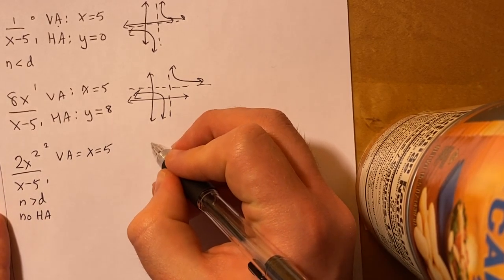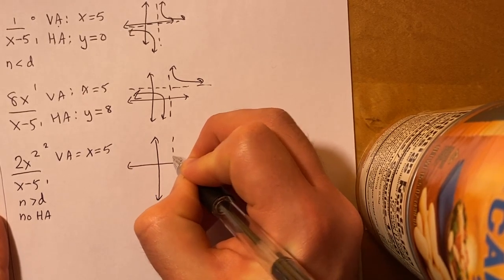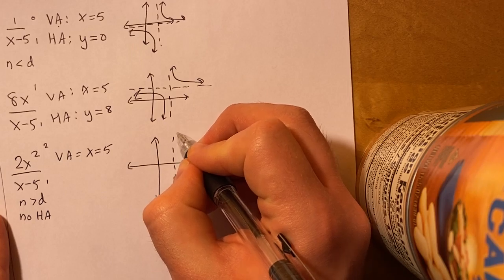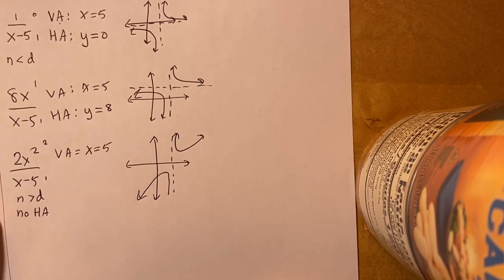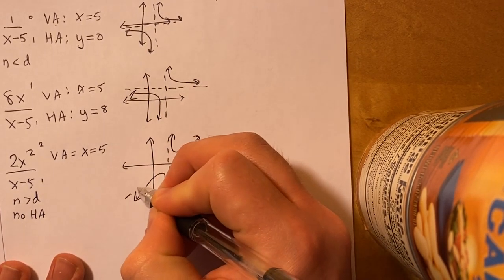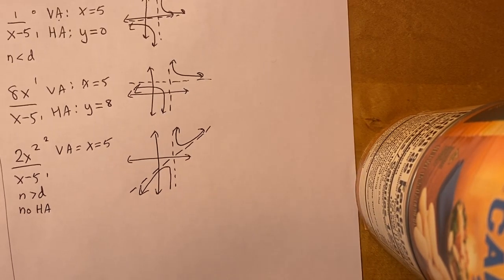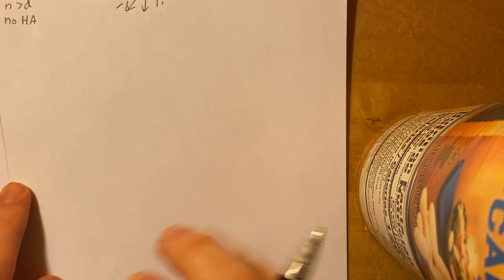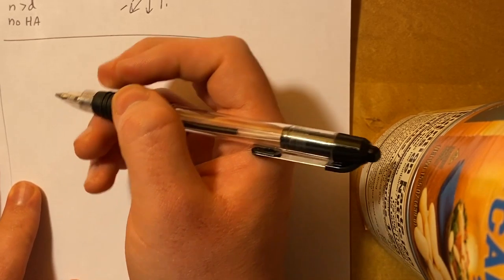But when I go to Desmos, I'm going to get something that looks really interesting. Our vertical asymptote is at x equals 5, like always. But I'm going to get something that looks like this. And I'm like, whoa, that is super strange. It's almost like there's an invisible line that's slanted here. And you would be right. This is called a slant asymptote. It's almost as if a horizontal asymptote just shifted to the side. So when the degree of the numerator is 1 degree higher than the denominator, you're going to get a slant asymptote.